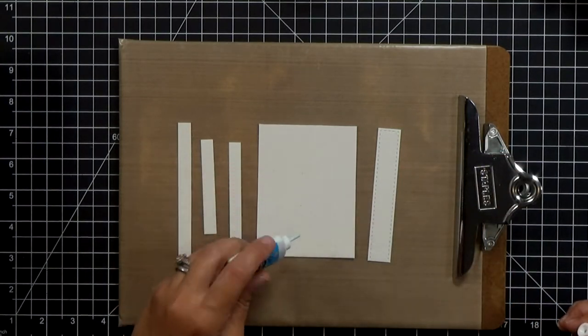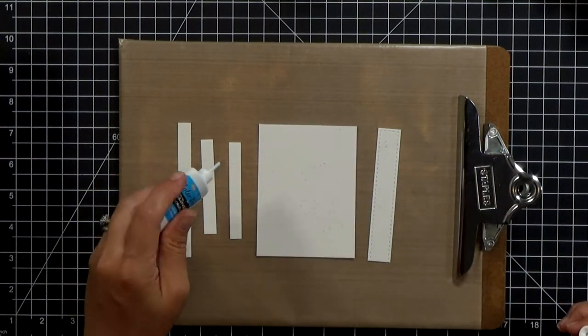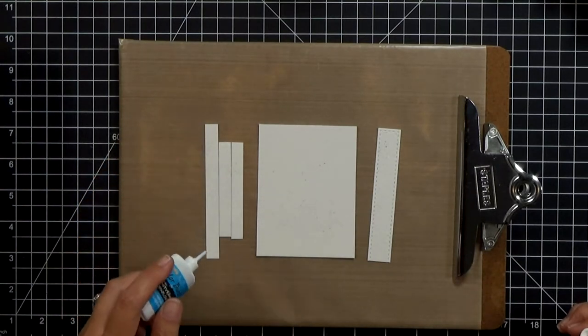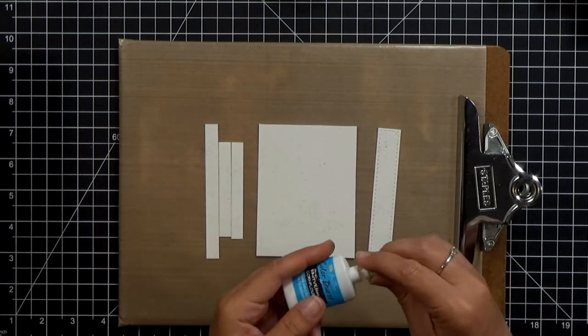She used a Lawn Fawn pop-up toaster die. I don't have that one but the mechanism is actually really easy to put together so I'm going to show you how to do it without that die set.